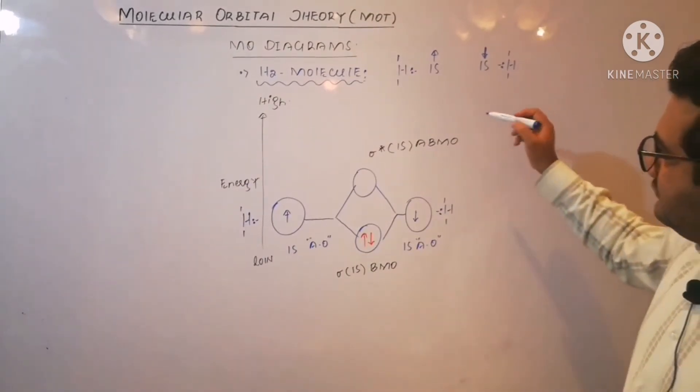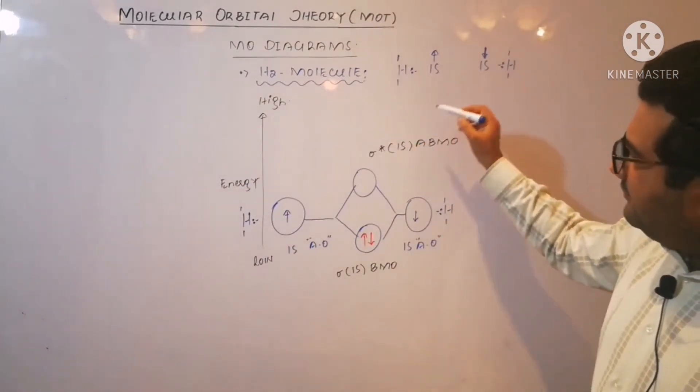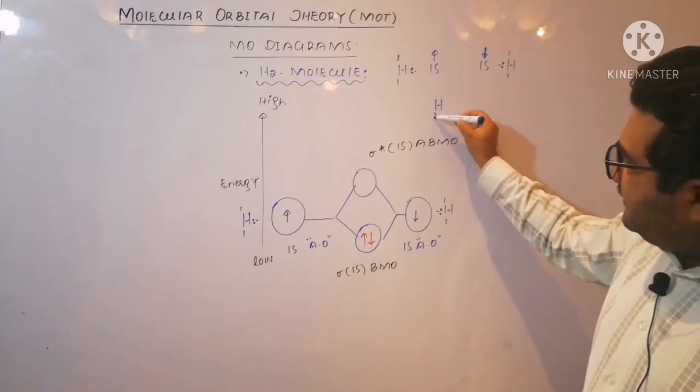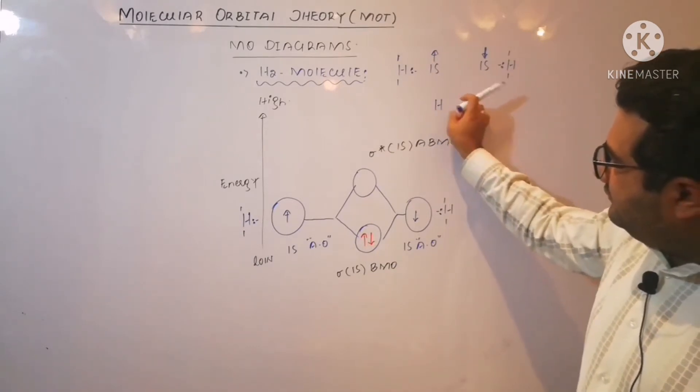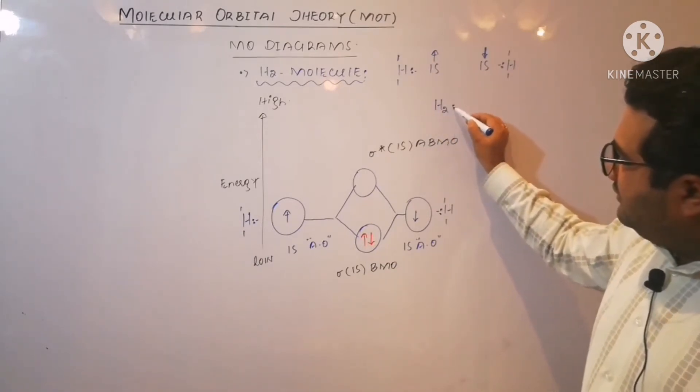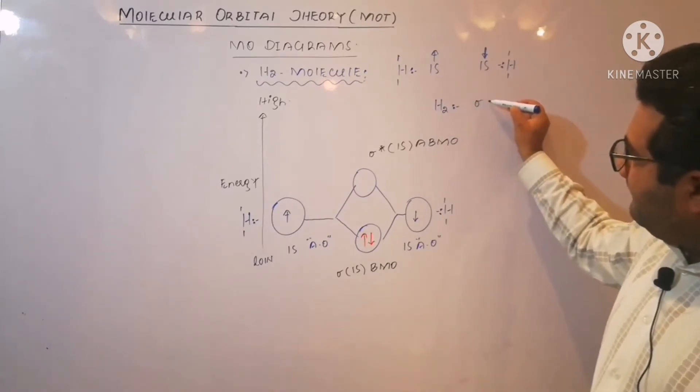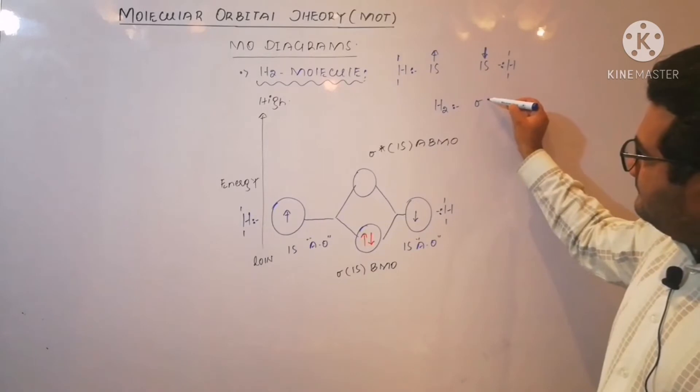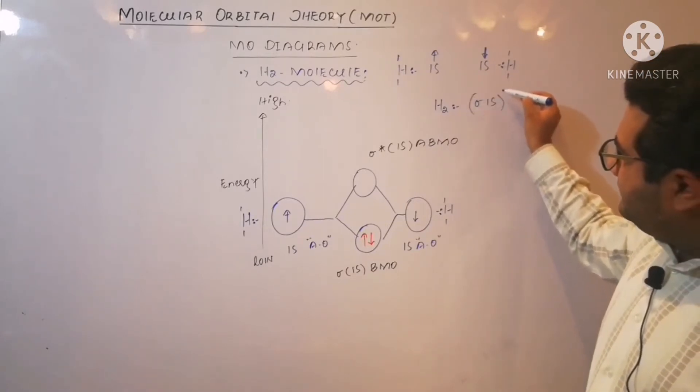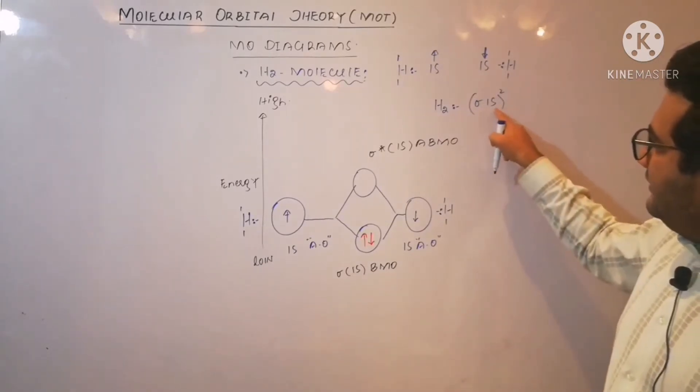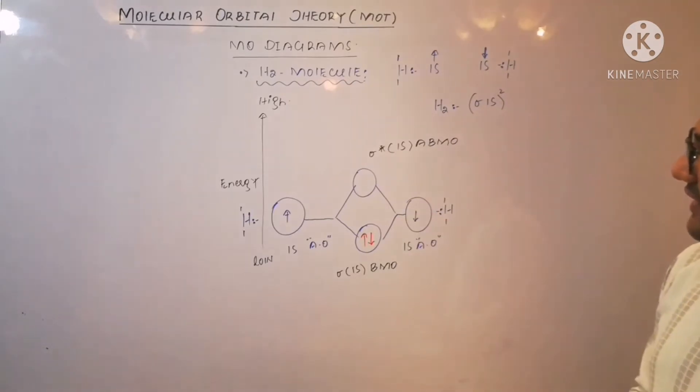Now after this overlap, we can say that in case of H2 molecule, its electronic configuration is sigma 1s2. Because the sigma star 1s is empty, so it is sigma 1s2.